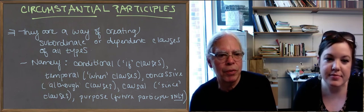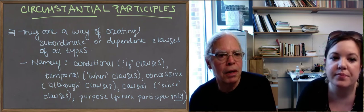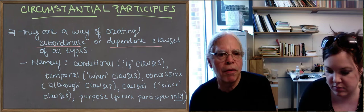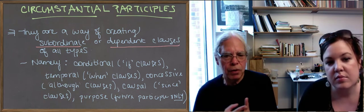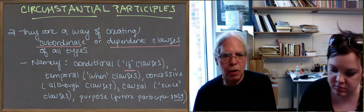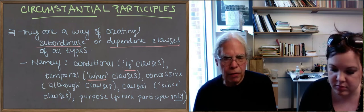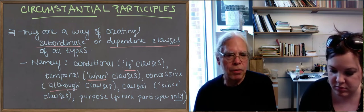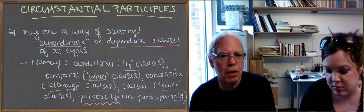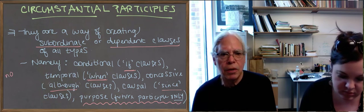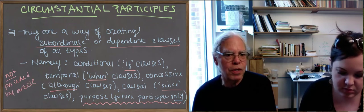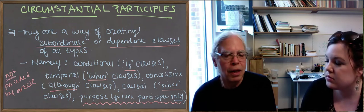This is the genius of the Greek participle — this is where they really shine and have an amazingly broad use. Their function is to provide an alternative way of creating subordinate or dependent clauses of all types. With a circumstantial participle — one not preceded by an article — you can create a conditional clause (an 'if' clause), a temporal clause (a 'when' clause), a concessive clause (an 'although' clause), a causal clause expressing reason ('since'), and, in the case of the future participle, you can also express purpose. That is actually the only reason the future participle exists in earlier Greek.